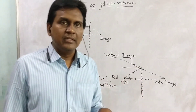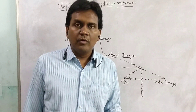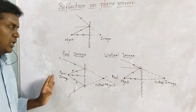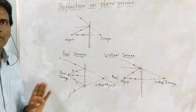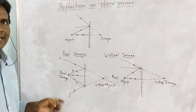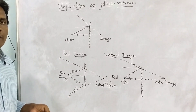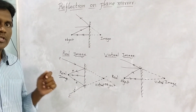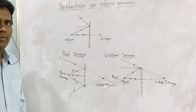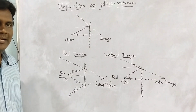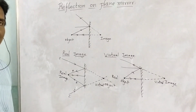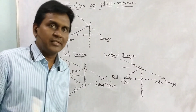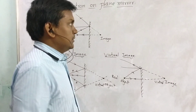So, if the object is real, the image will be virtual, and vice versa. Both the object and image cannot be real at the same time, and both cannot be virtual at the same time.